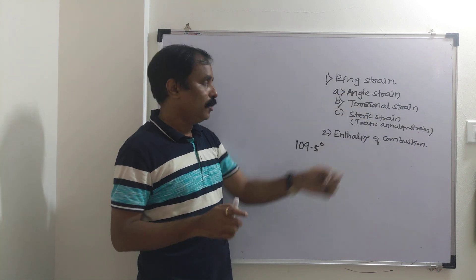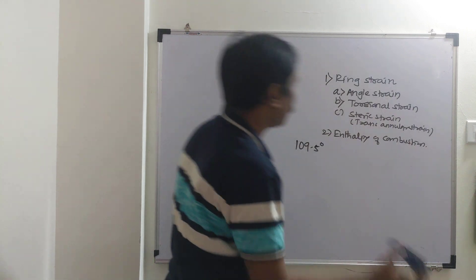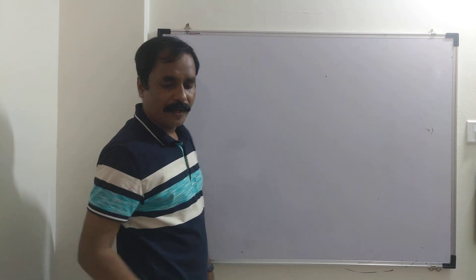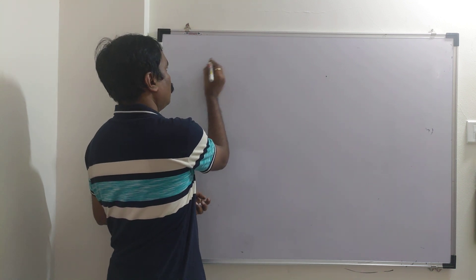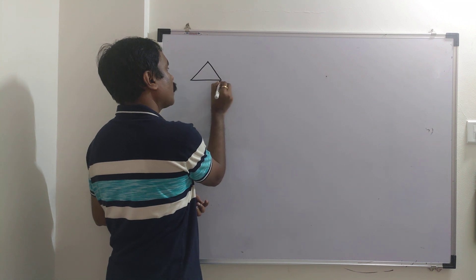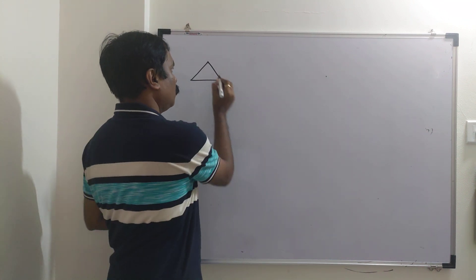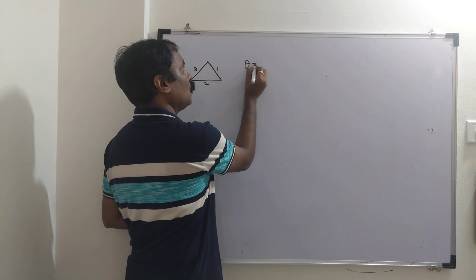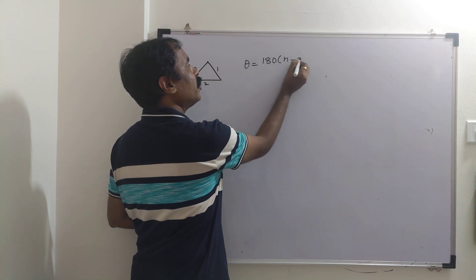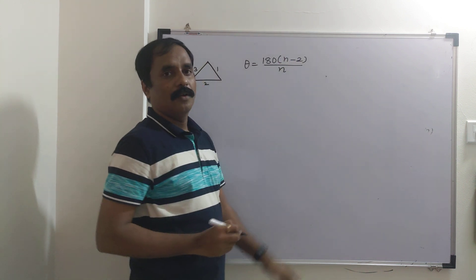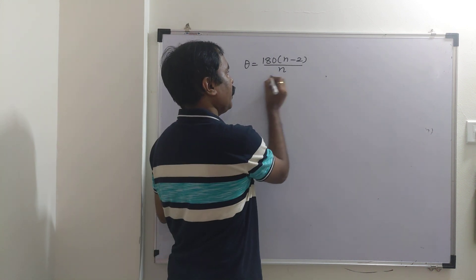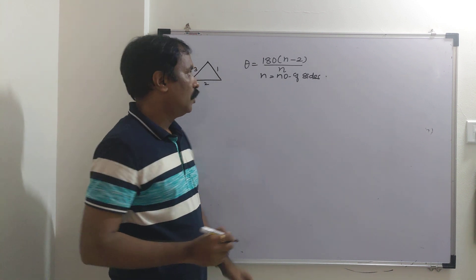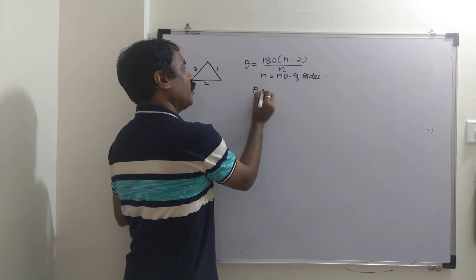First, let's look at angle strain starting with cyclopropane. To find the bond angle in any cycloalkane, use the formula: theta equals 180 times (n minus 2) divided by n, where n is the number of sides.